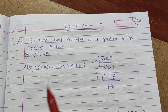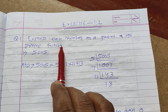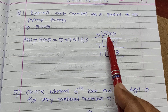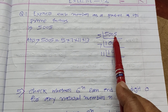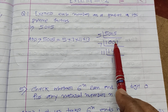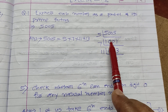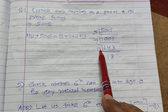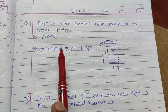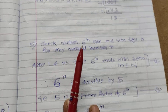The first question is: express each number as a product of its prime factors. For 5005, we take the prime factorization using the division method. 5 multiplied by 1001 is equal to 5005. Then I have taken 7; 7 divides 1001. Then 11, and 13 divides 143. So I have written 5005 is equal to 5 into 7 into 11 into 13.